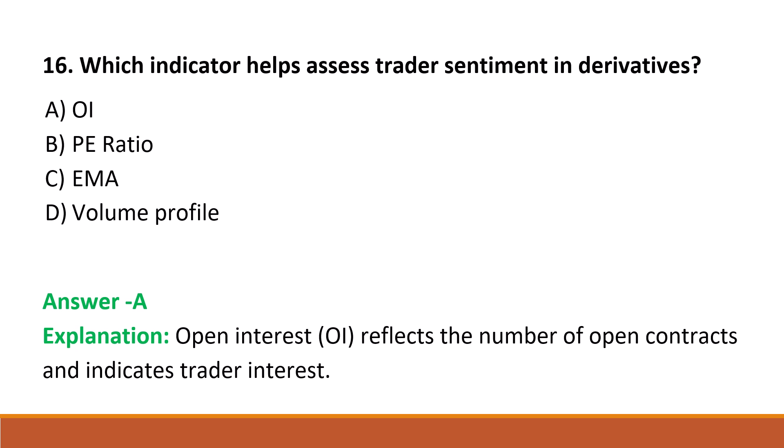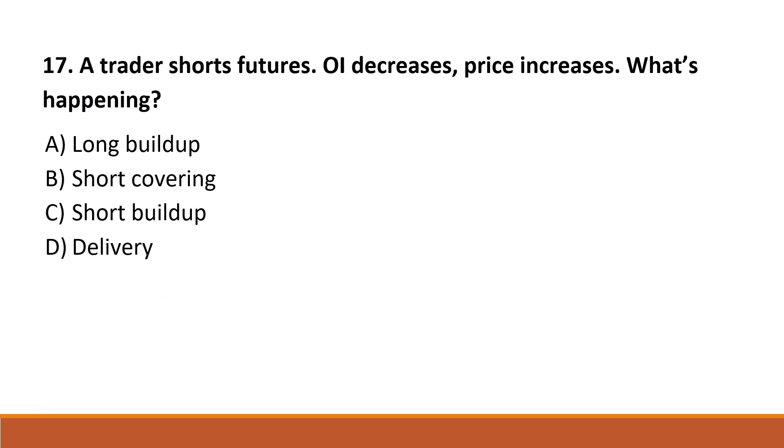Next question: a trader shorts futures, OI decreases, price increases — what's happening? Option A: long buildup. Option B: short covering. Option C: short buildup. Option D: delivery. The correct answer is Option B, short covering.